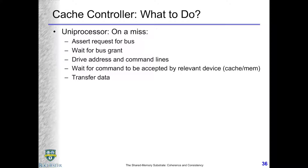We break down the address into index, tag, and offset, and we find out we don't have the data in the cache — that's a miss. In a bus-based system, we need to go to the bus. You request by sending an arbiter signal to say you need the bus. When you get the bus grant, you drive the data and command lines to indicate a read or write, and wait for the other device to reply — it may be the next level cache or memory.